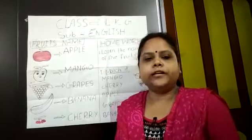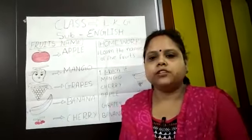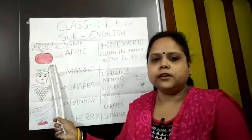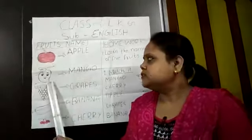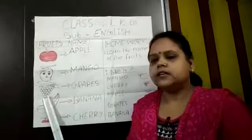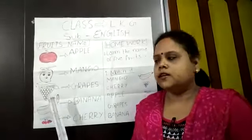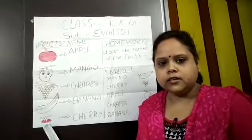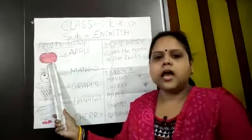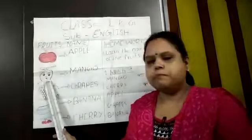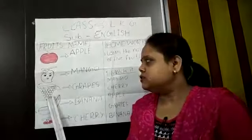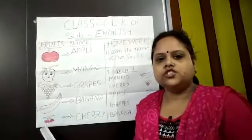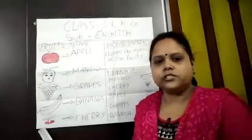So children, now you repeat these names with me. First one is Apple. Mango. Grapes. Banana. Cherry. Now again repeat: Apple. Mango. Grapes. Banana. Cherry. These are five fruit names.